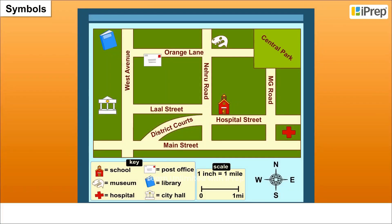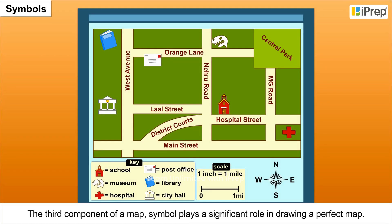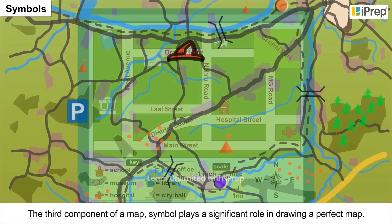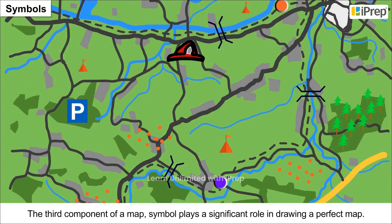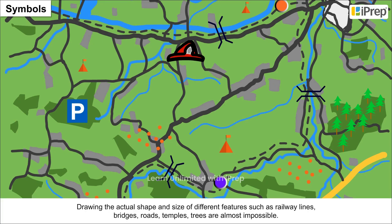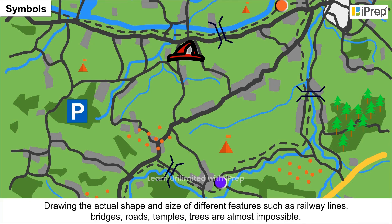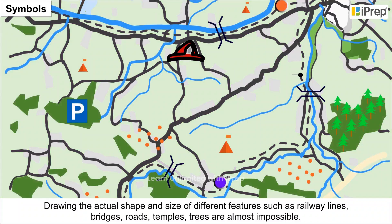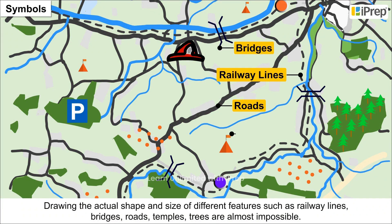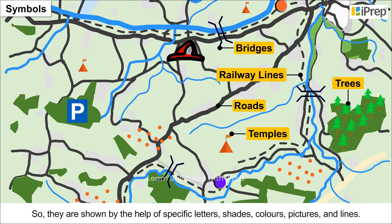Symbols. The third component of a map, symbol, plays a significant role in drawing a perfect map. Drawing the actual shape and size of different features such as railway lines, bridges, roads, temples and trees are almost impossible.